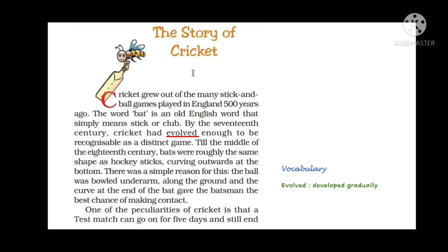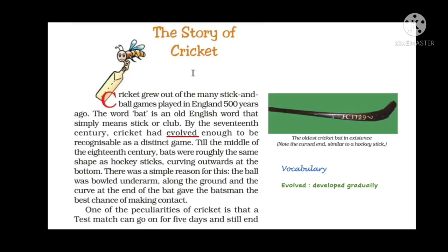Till the middle of the 18th century, bats were roughly the same shape as hockey sticks, curving outwards at the bottom. There was a simple reason for this: the ball was bowled underarm along the ground, and the curve at the end of the bat gave the batsman the best chance of making contact. So the bats were curved like a hockey stick until the 18th century, because the balls were rolled on the ground and not thrown through the air.